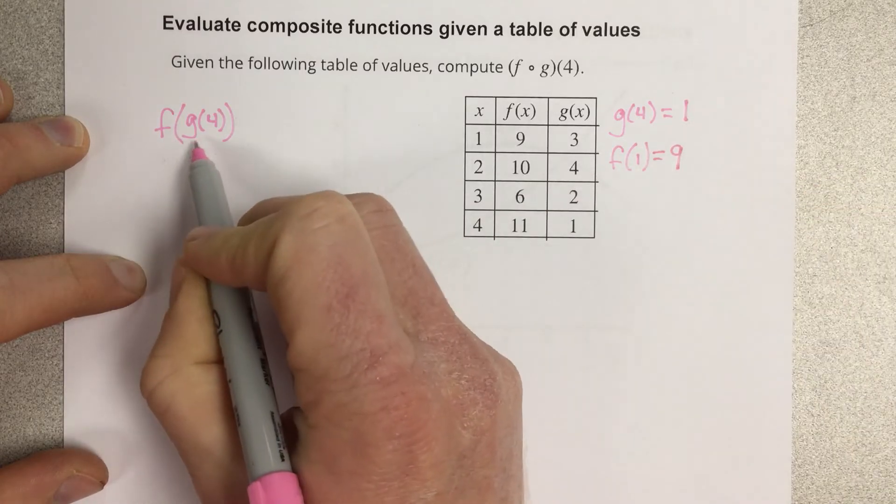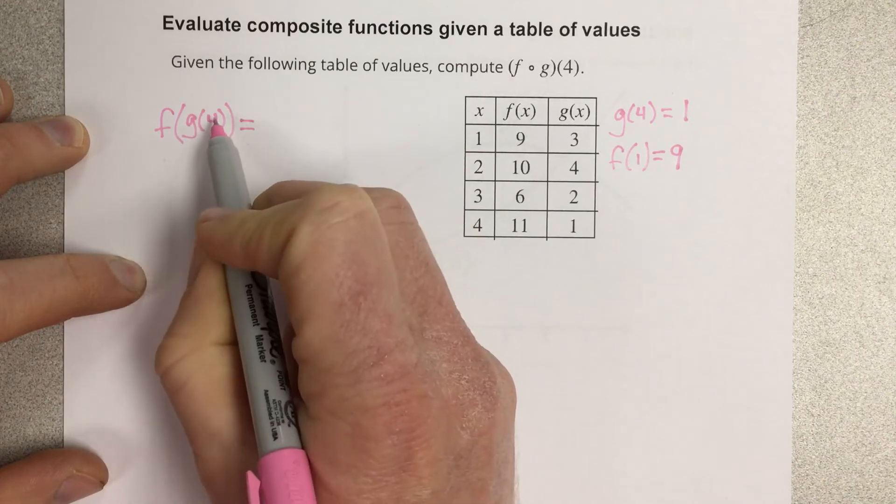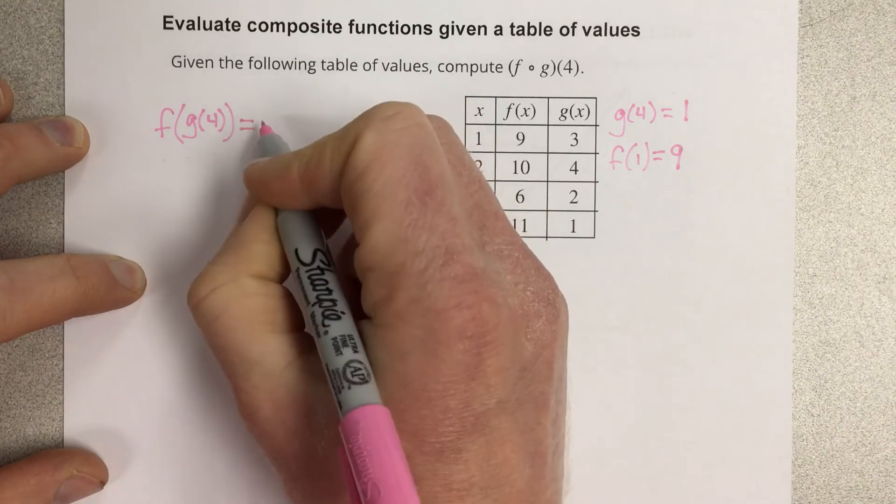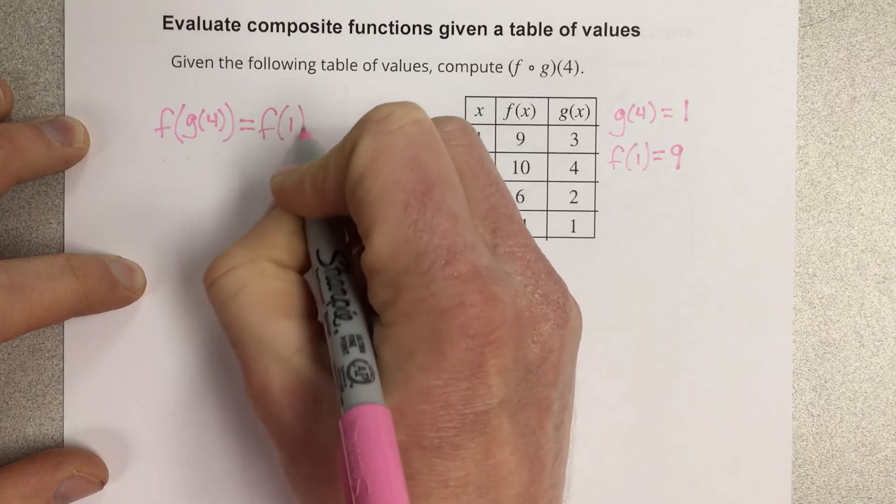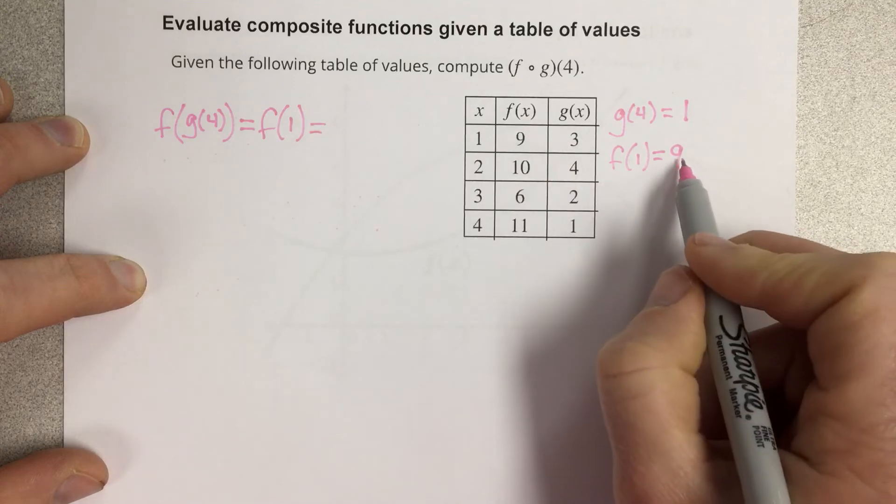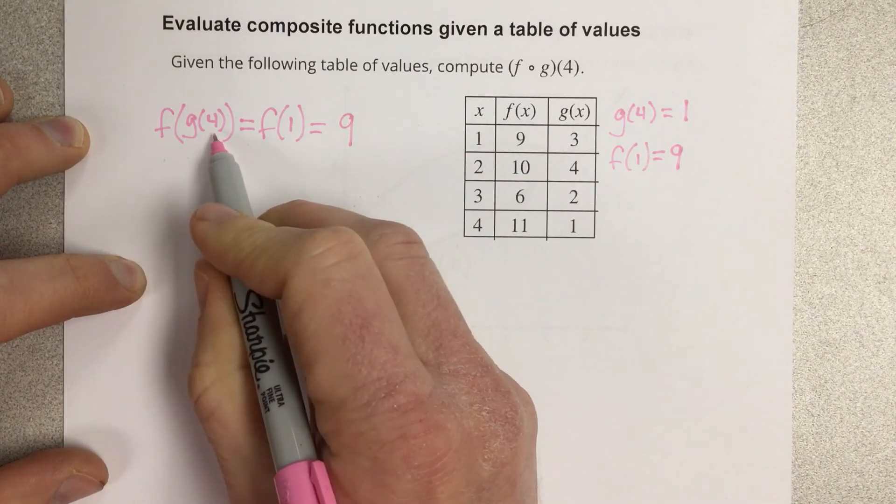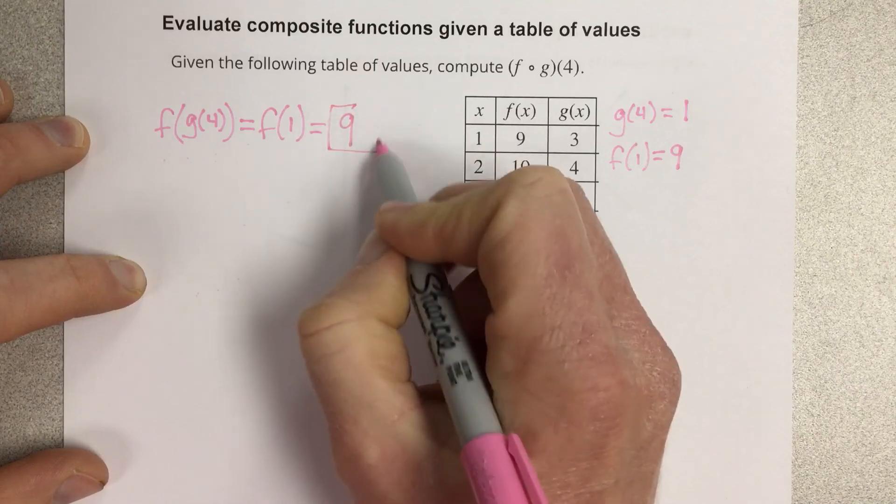So when I'm looking at f of g of 4, what that really is saying is g of 4 has an output of 1, so that's really just f of 1. And then f of 1 has an output of 9, so f of g of 4 is really just 9.